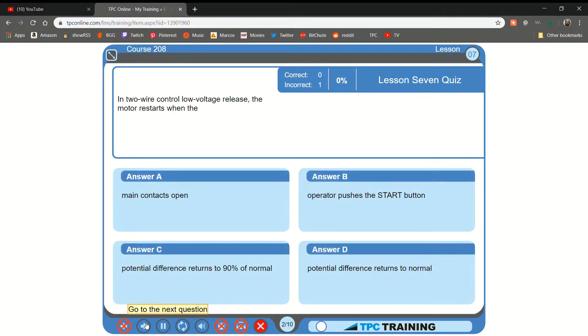In two-wire control low voltage release, the motor restarts when the... A. Main contacts open. B. Operator pushes the start button. C. Potential difference returns to 90%. That is not correct.